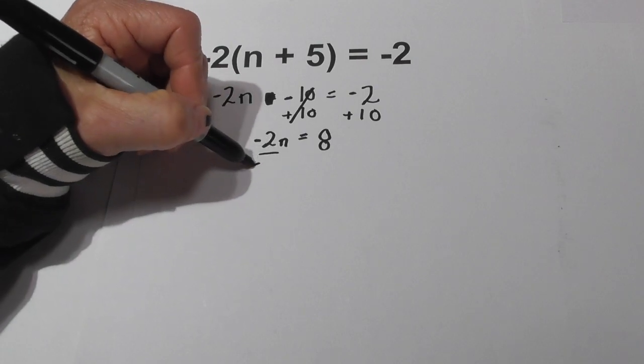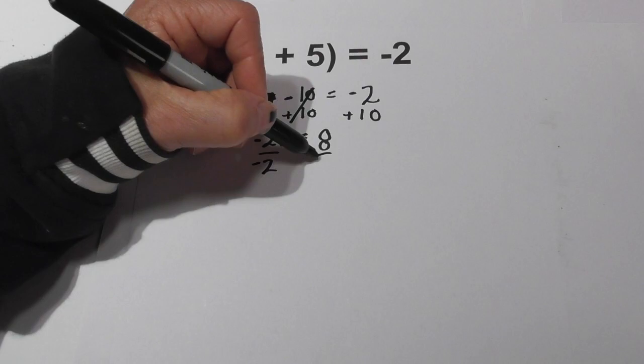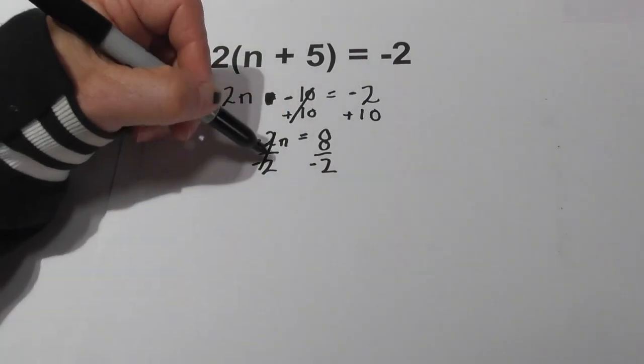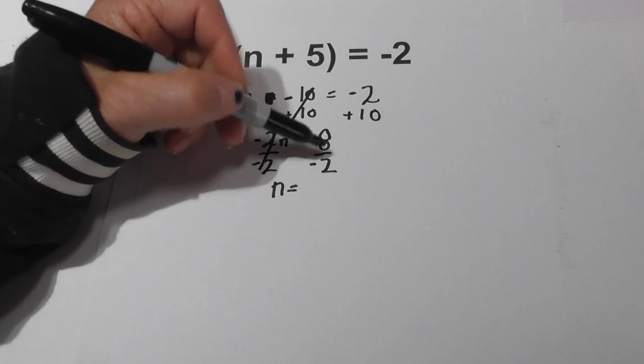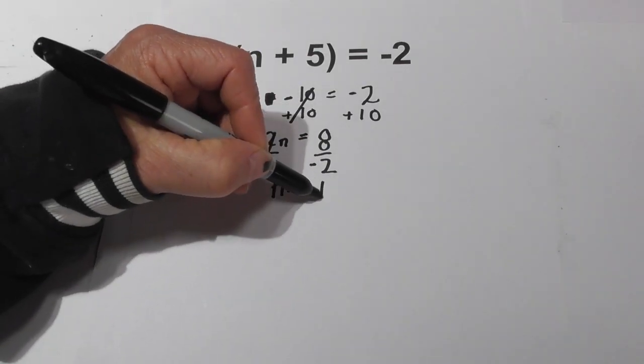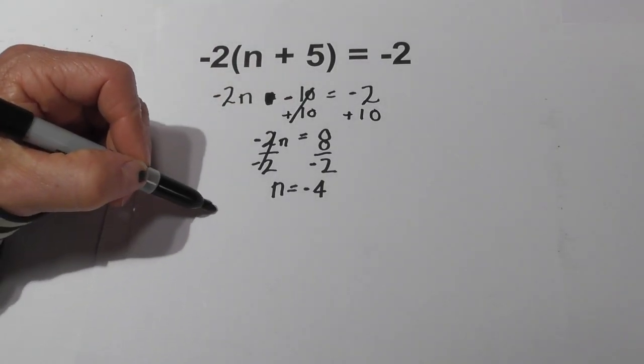I'm now going to divide both sides by 2 to get the n by itself. These cancel. Now watch the signs here, remember 8 divided by -2 is indeed -4. Now let's check and see if our answer is correct.